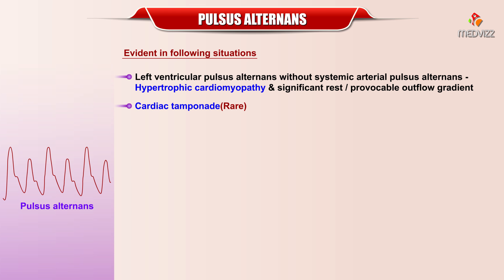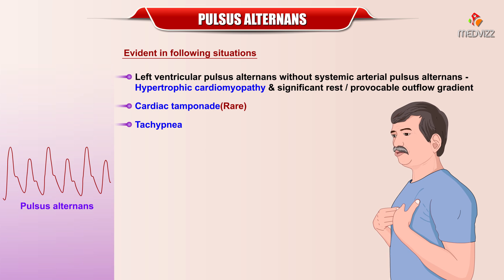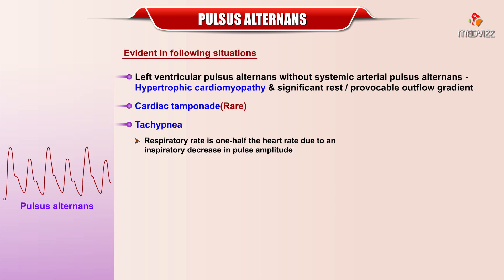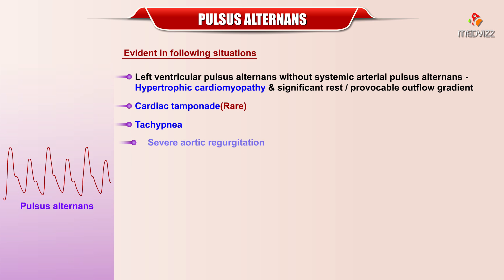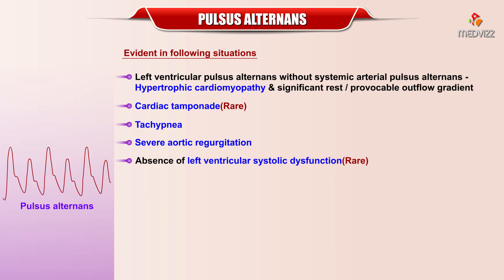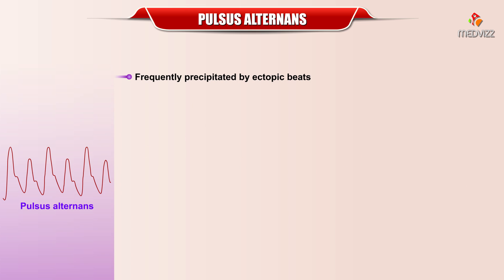Abolition of left ventricular alternans occurs after successful myomectomy. Pulsus alternans is rarely encountered in patients with cardiac tamponade. It can occur in the presence of marked tachypnea when the respiratory rate is one half the heart rate, due to an inspiratory decrease in the pulse amplitude. The pulse abnormality disappears when respiration is held transiently. It may be seen in patients with severe aortic regurgitation, though it is rare in the absence of left ventricular systolic dysfunction.